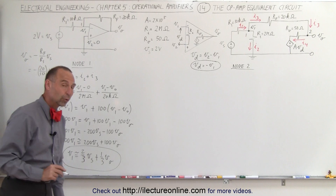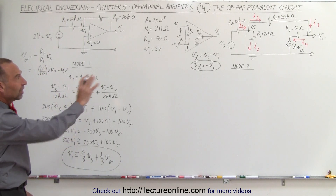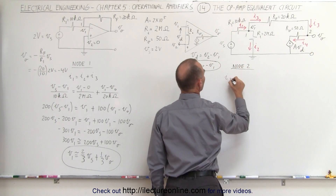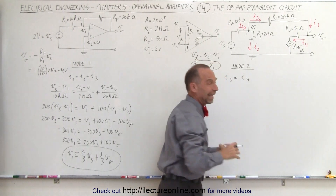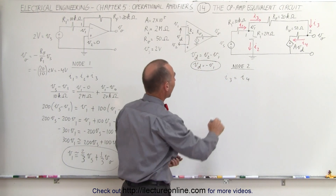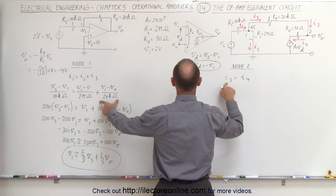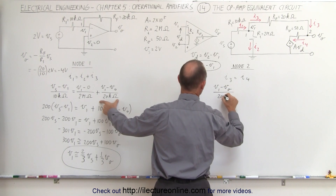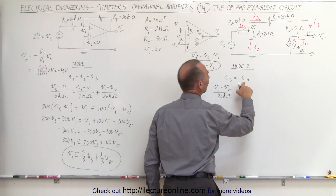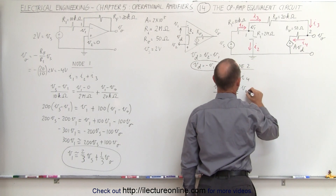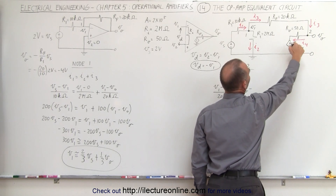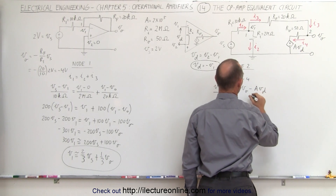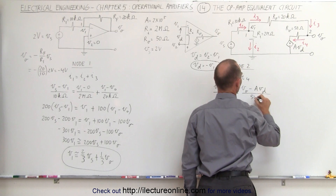Now at node 2, the input current I_3 must equal the output current I_4. I_3 is (V_1 minus V_O) divided by 20 kilohms. I_4 equals (V_O minus A·V_D) divided by 50 ohms, where A is the open-loop gain and V_D is the dependent source voltage.